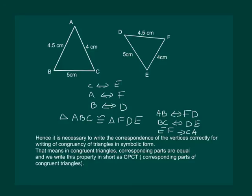That means in congruent triangles corresponding parts are equal and we write this property in short as CPCT whose full form is corresponding parts of congruent triangles.